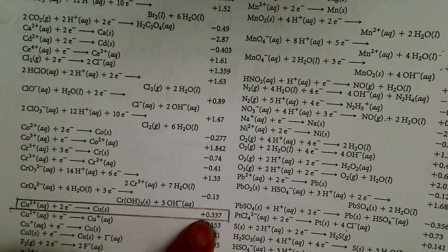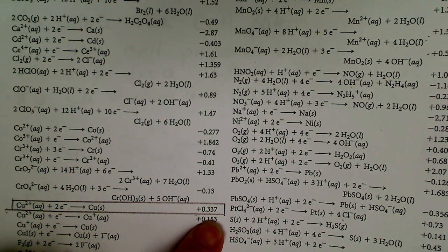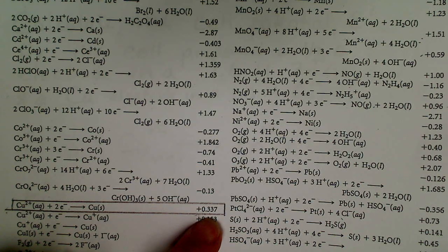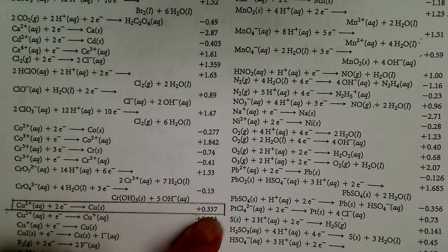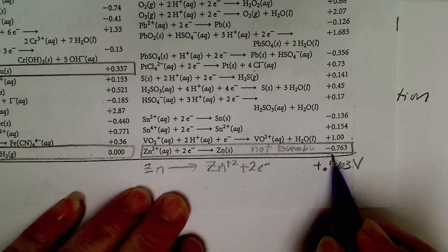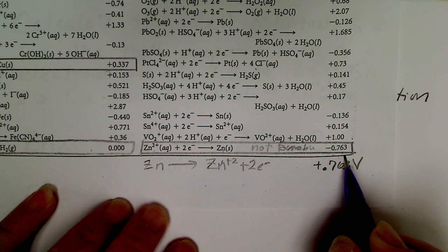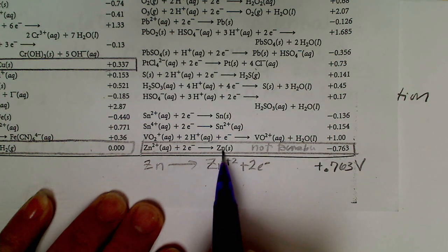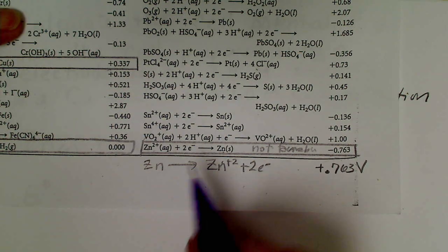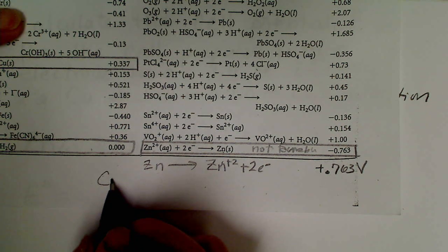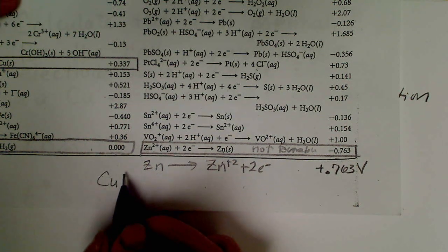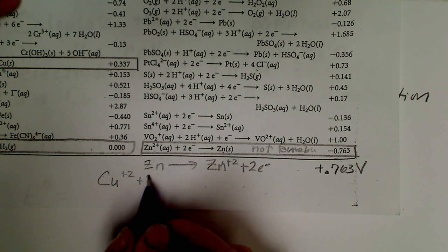Copper's potential measured against the hydrogen electrode is plus 0.337 volts. Zinc's reduction potential is negative 0.763 volts. So we could reverse this reaction, as we've written here, and add that to our copper reduction reaction.